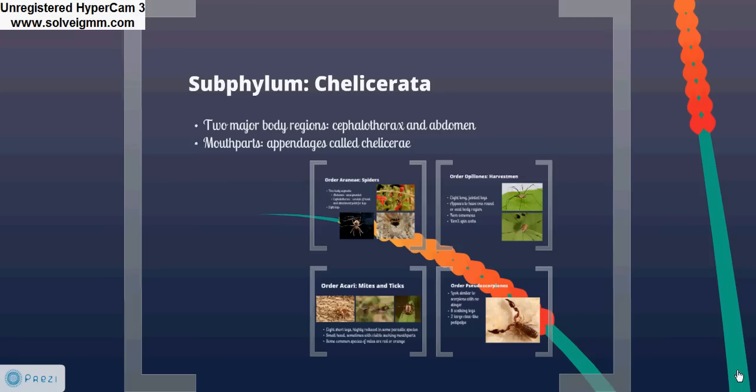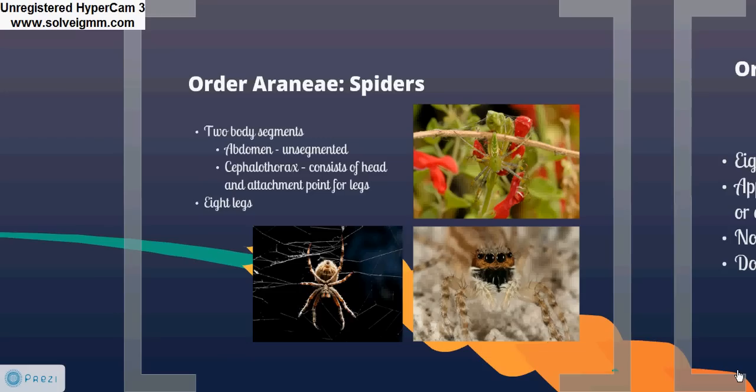Our most common and widely recognized chelicerates are categorized as arachnids. The orders we will discuss are all within the class Arachnida. Let's start with the well-known spiders. All spiders have two body regions — the abdomen and cephalothorax — and eight legs, all attached to the cephalothorax. These photographs show examples of different types of spiders. Bottom left is an orb weaver, bottom right is a jumping spider, and the top photo is one of the many types of spiders that wait well camouflaged on flowers to capture visiting pollinators.